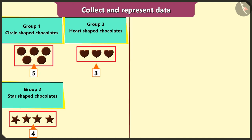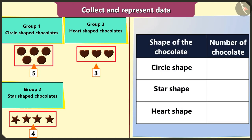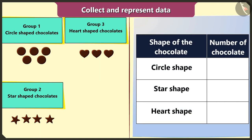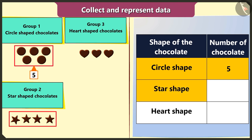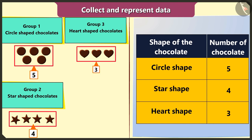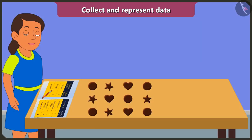Now I will represent all this data by making a table like this. The number of circle shaped chocolates is five. The number of star shaped chocolate is four. And the number of heart shaped chocolate is three.